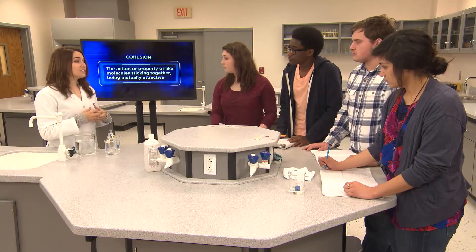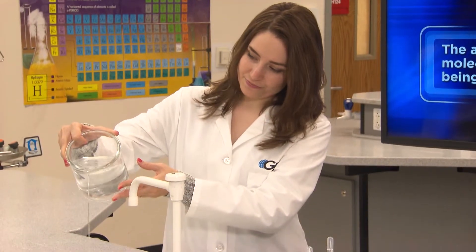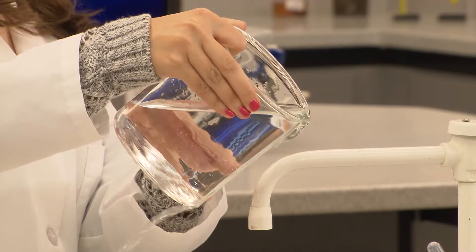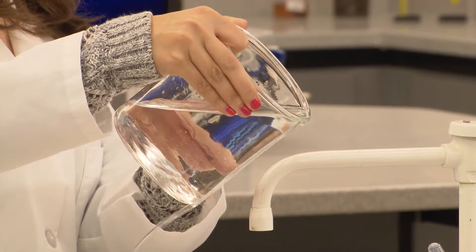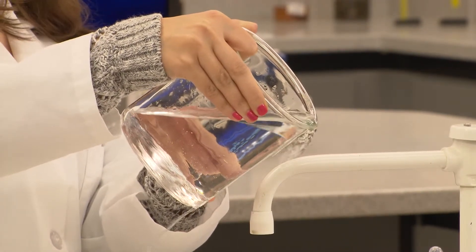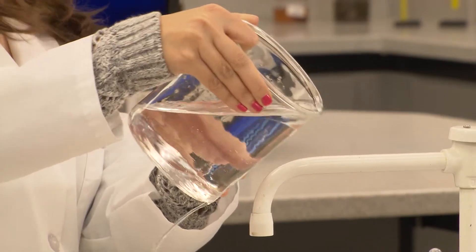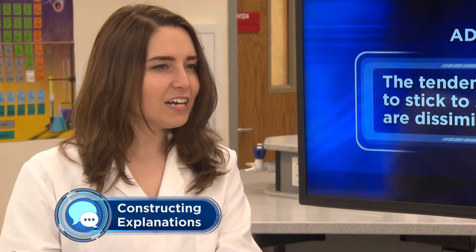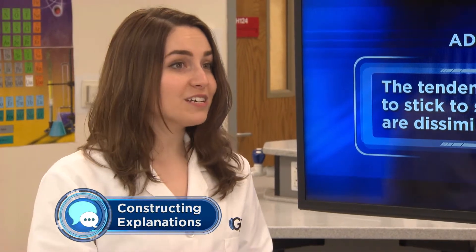Water also has the ability to stick to other substances that are polar in nature. If I don't pour the water out of this glass fast enough for the attractive forces between the water and the components of the glass to be overcome, the water will just stick to the glass and run down the side. Adhesion is the tendency of molecules to stick to substances that are dissimilar, and adhesion is what causes the water to cling to the glass. It's kind of like the way an adhesive bandage sticks to your skin.